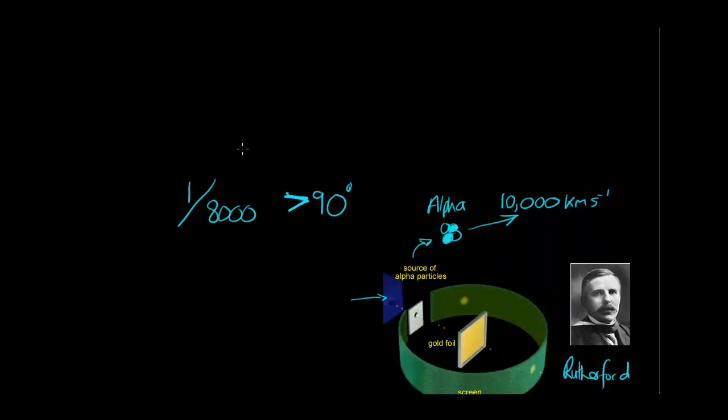Going back to our ideas earlier, remember we talked about the JJ Thompson plum pudding model of the atom where we've got this positive goo and in there we've got these electron plums just orbiting in various orbits inside the goo. Imagine that if you were firing an alpha particle going at 10,000 kilometers per second into this sort of jelly-like substance. It would be like firing a bullet through a gun. It would just go straight through. Hardly any deflection would be expected. And that's what Rutherford and his team were expecting.